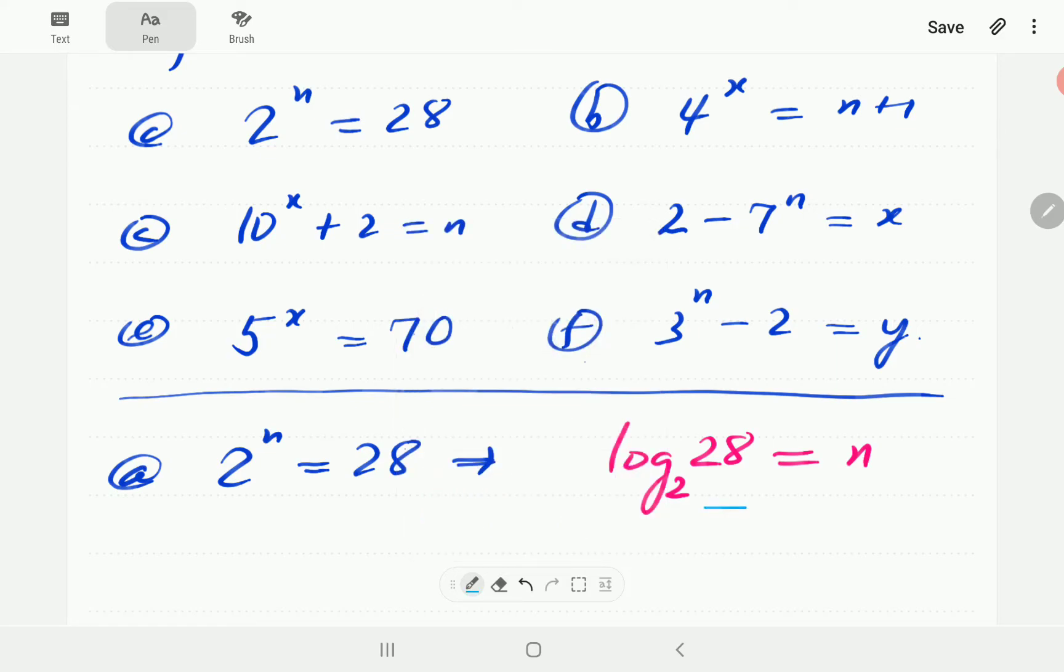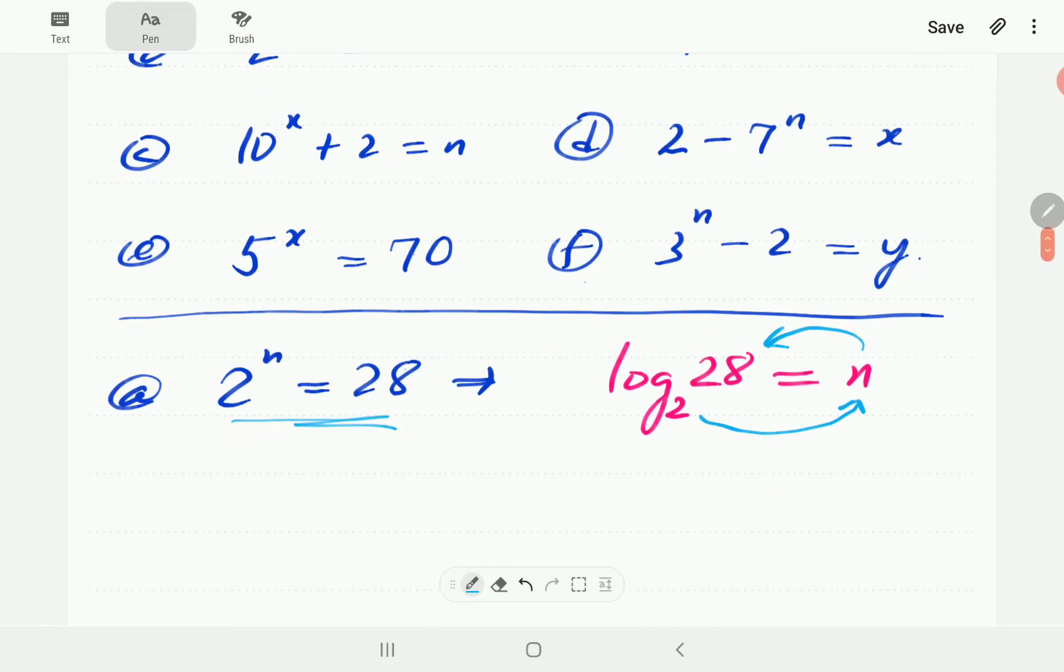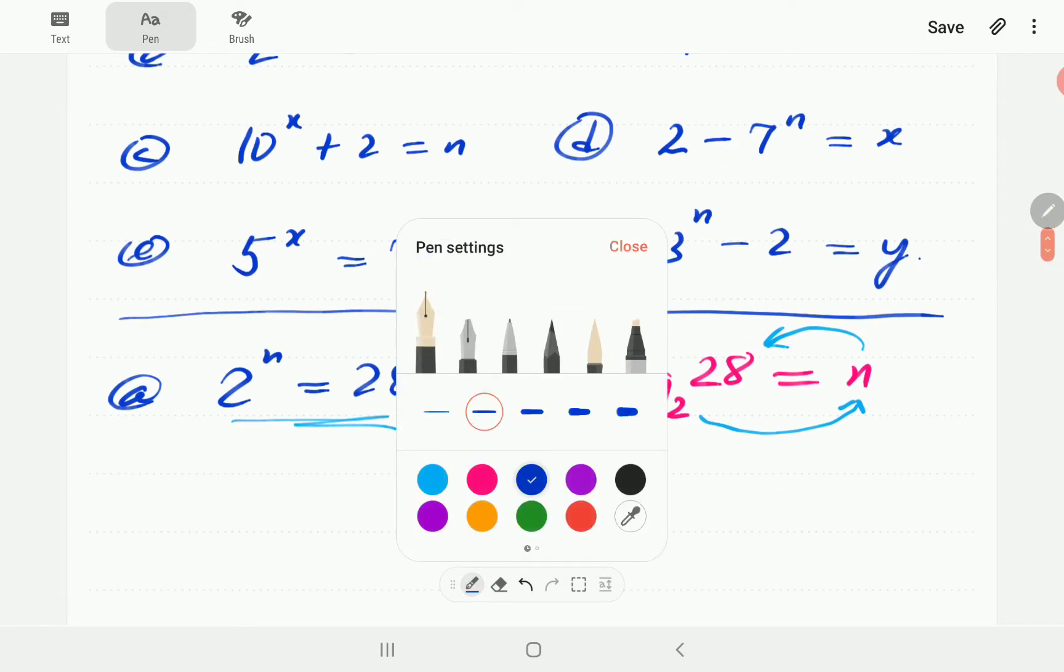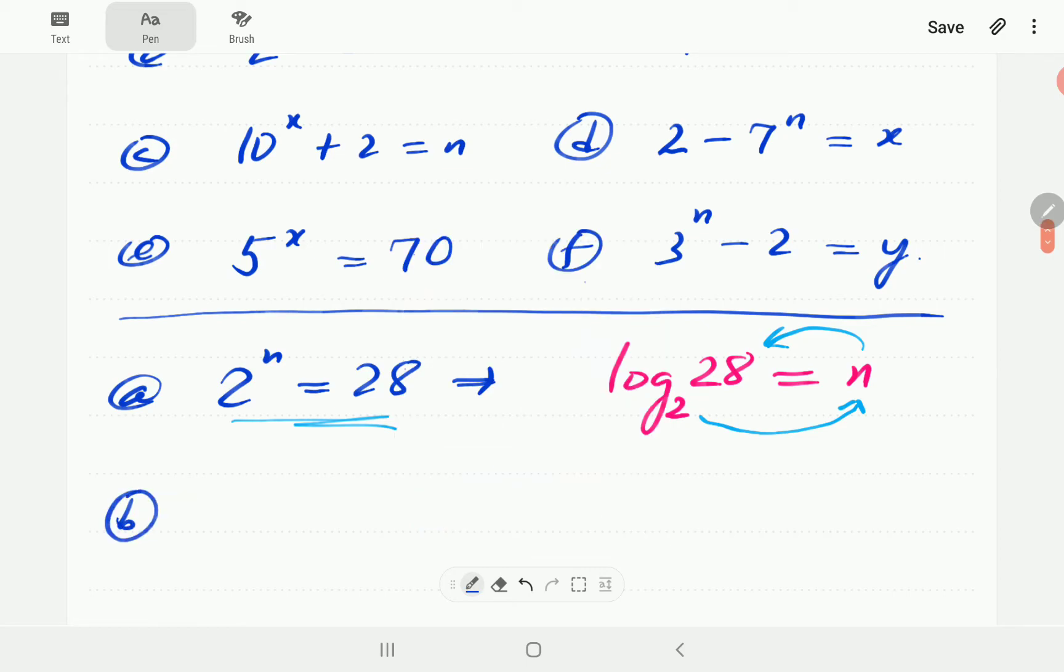If this has been done correctly, it should always be such that this to the power that gives that. So this is saying 2 to the power n equals 28, which is exactly what we started off with.